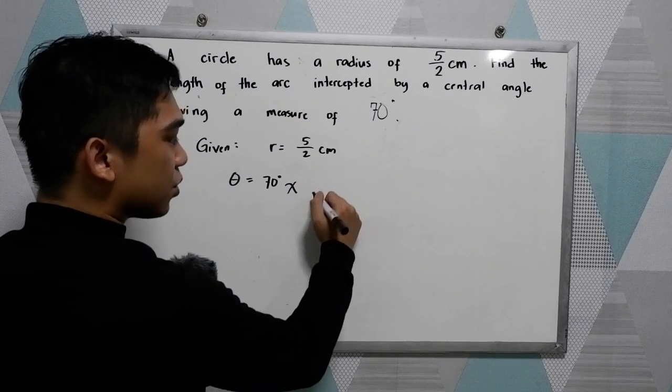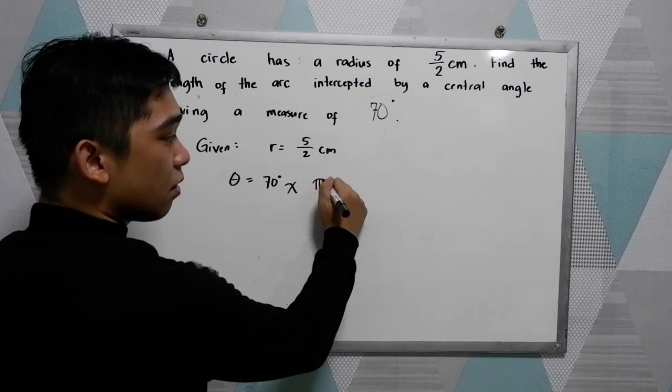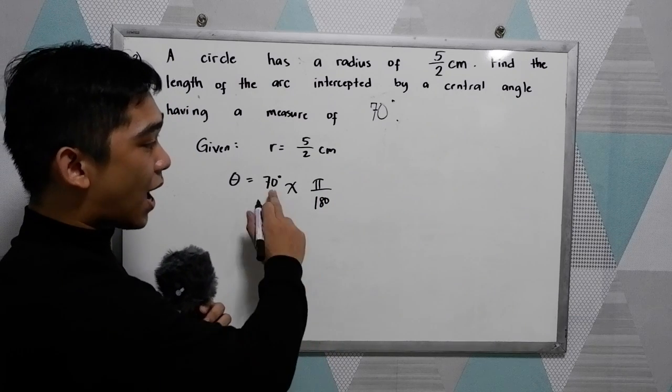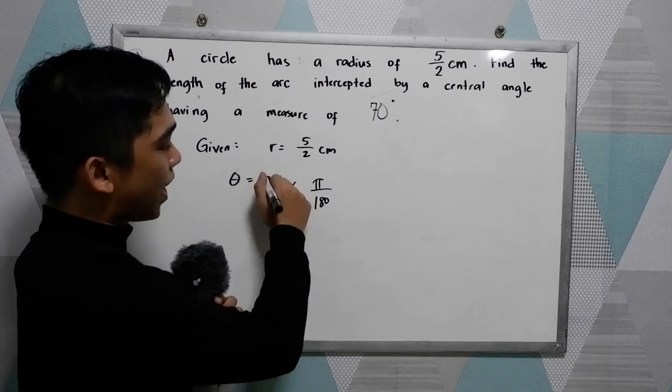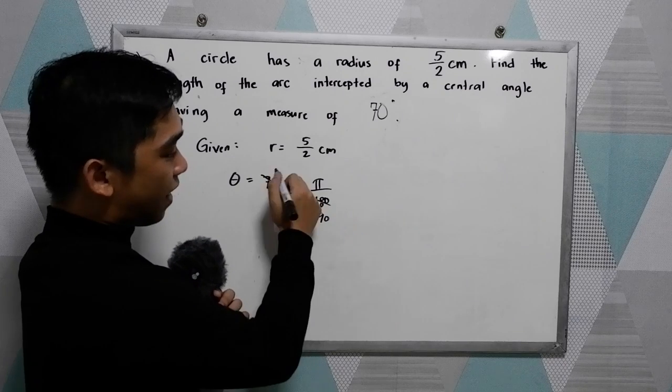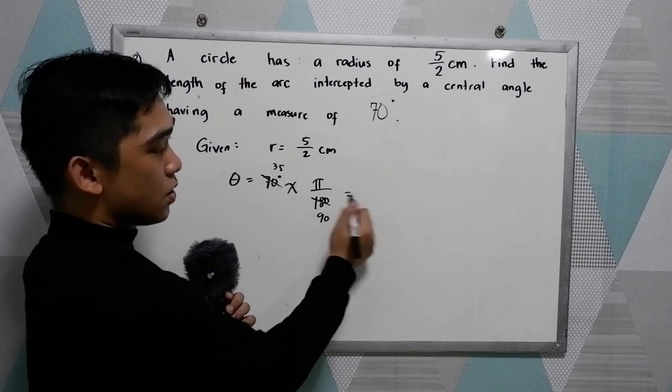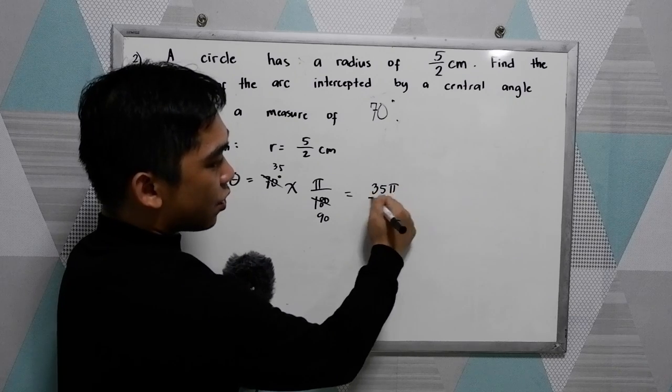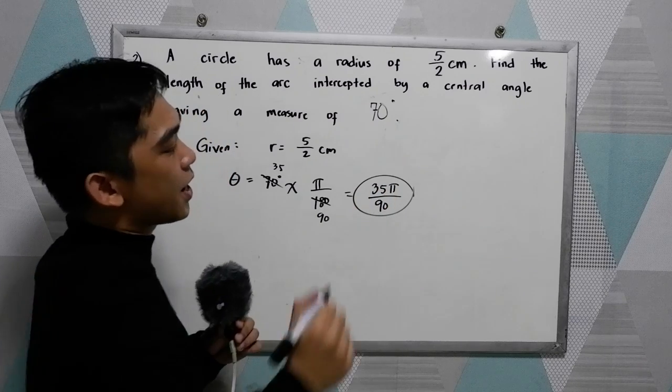Now convert our central angle into radian measure. So multiply it to pi over 180. Divisible by 2. So we have 90 here then 35. So the equivalent is 35 pi over 90. Okay.